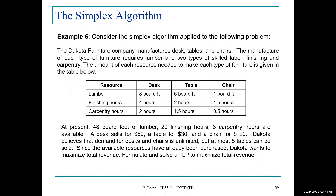Let's look at one example. We have a furniture company that manufactures desks, tables, and chairs. The manufacture of each type of furniture requires lumber and two types of skilled labor: finishing and carpentry. The amount of each resource needed to make each type of furniture is given in this table. A desk requires eight board-feet of lumber, a table six, and a chair one.